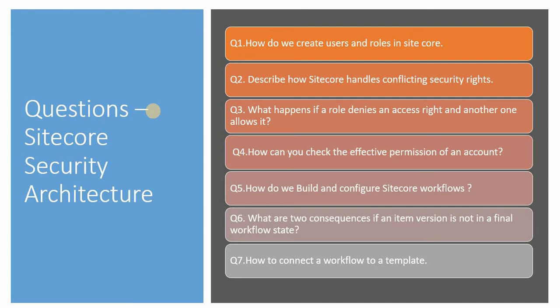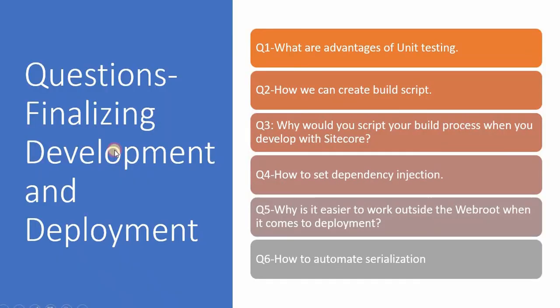The sixth question is: what are two consequences if an item version is not in a final workflow state? What are the consequences if it is not in the final version state? The seventh question is: how do you connect a workflow to a template? You should know how to connect a workflow to a template so that you can reuse it. Try to answer these questions in the comment section; if you face any problem, do ask me.